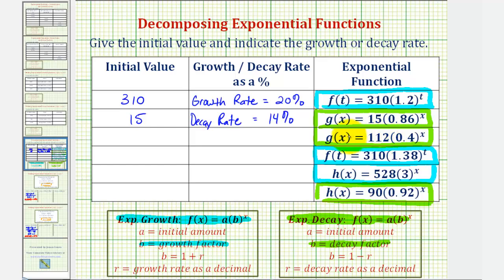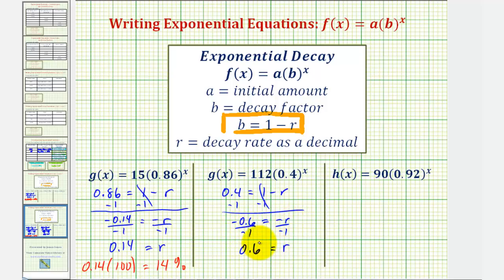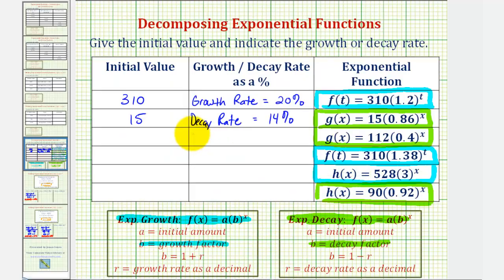Next, we have another exponential decay function where the decay factor is 0.4. So we have 0.4 equals one minus R, which gives us R equals 0.6. Converting: 0.6 times 100 equals 60 percent. So our decay rate is 60 percent, and the initial value is 112.